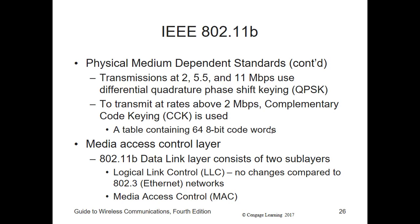To transmit at rates above 2 Mbps, we have to use something called Complementary Code Keying (CCK). A table containing 64 8-bit code words is used. These code words have unique mathematically calculated properties that allow them to be correctly distinguished from one another by the receiver. The 5.5 Mbps rate uses 4 of these code words to encode 4 bits per signal, whereas the 11 Mbps rate uses all 64 code words to encode 8 bits per symbol.